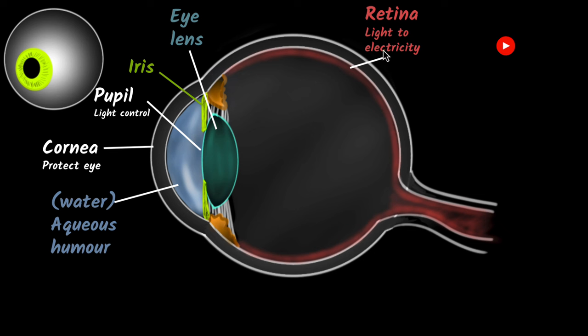And then what happens once we have light getting converted into electricity? We need to send that electric signals to the brain. So we need some kind of a wiring system. And that wiring system is what we call the optic nerves. Optic nerves basically sends the electrical signals to the brain, and then the brain processes that information.